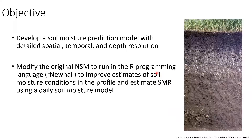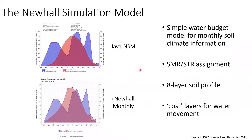Our objective was to develop a soil moisture prediction model with detailed spatial, temporal, and depth resolution to apply to different questions. In particular, we wanted to modify the original Newhall Simulation Model, or NSM, to run in our programming language to improve estimates of soil moisture conditions in the profile and estimate moisture regimes from that data. We're currently developing a package called R. Newhall that can help us implement daily soil moisture models as well as those original moisture regime classifications. The Newhall Simulation Model is a simple water budget model used for monthly soil climate estimates.